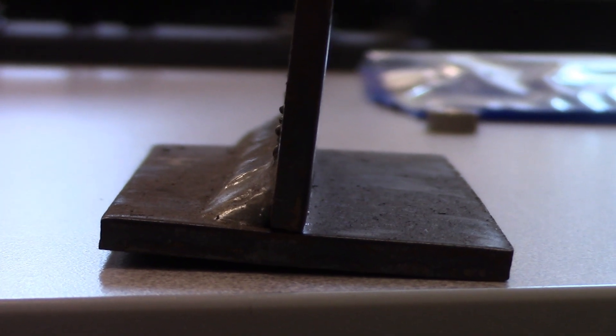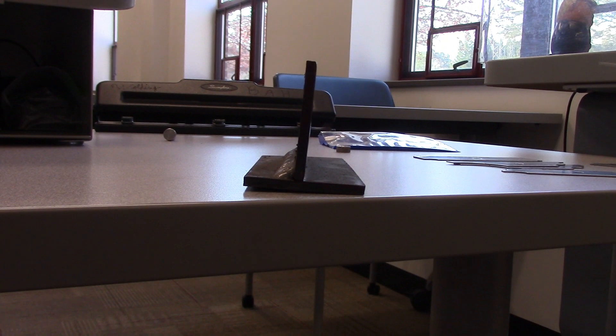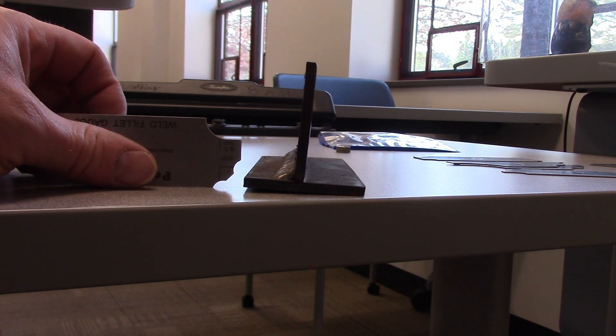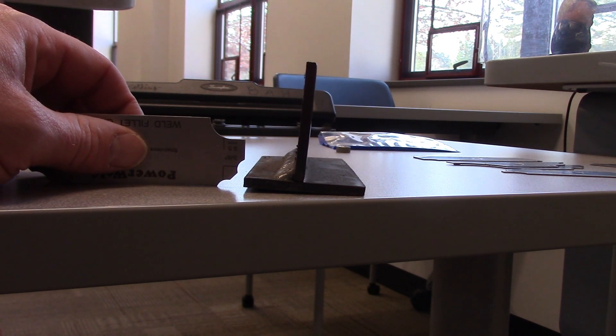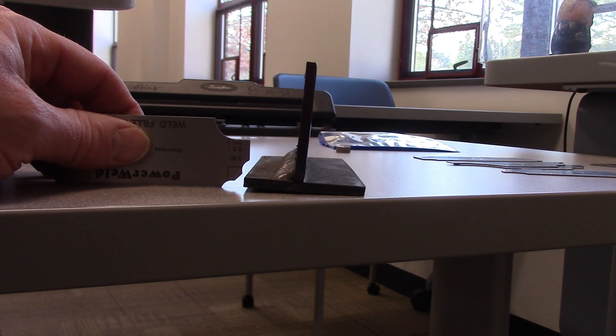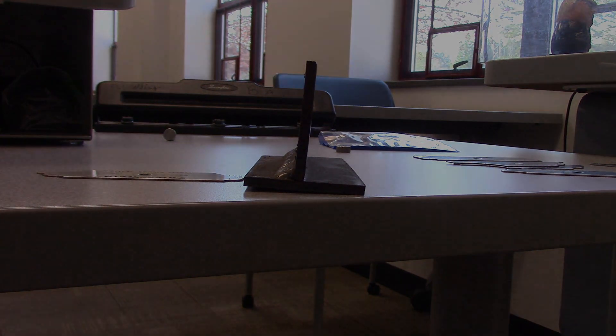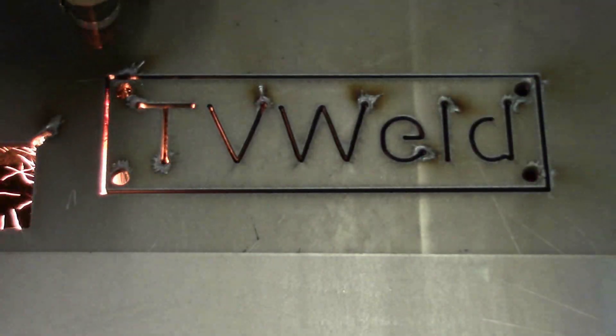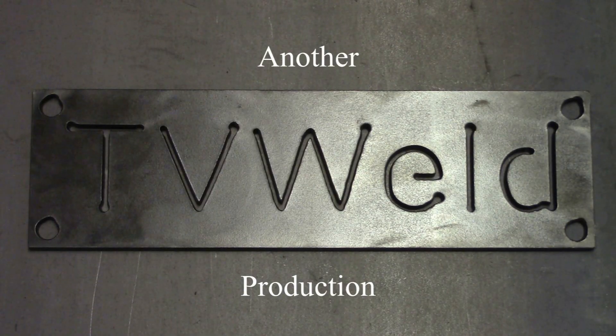And that's all you have to do in order to find the leg size of a fillet weld. And the convexity. So hopefully you have an idea of how to figure out the leg size of a fillet weld and the convexity of it. And what a fillet gauge is. Thanks for watching and subscribing to TV weld. And we're going to get out of here. We'll see you next time.